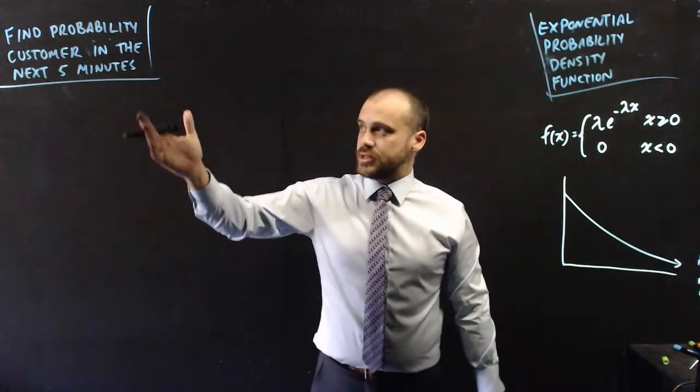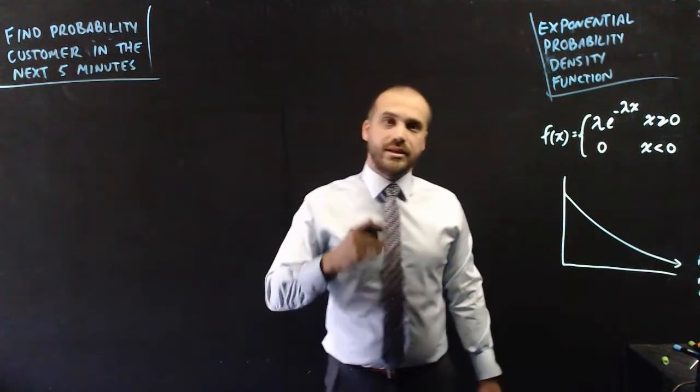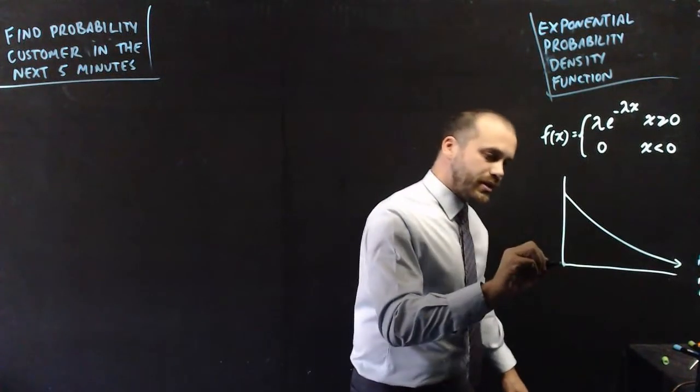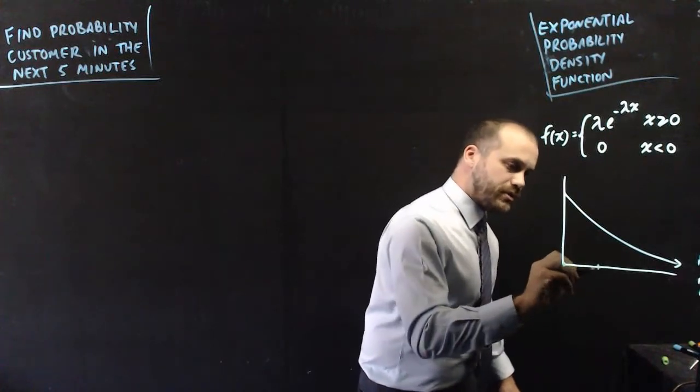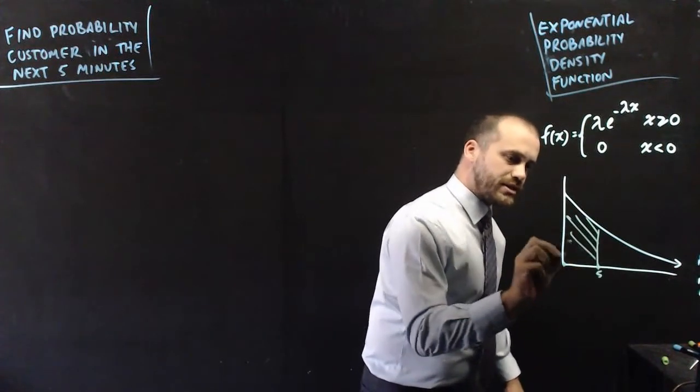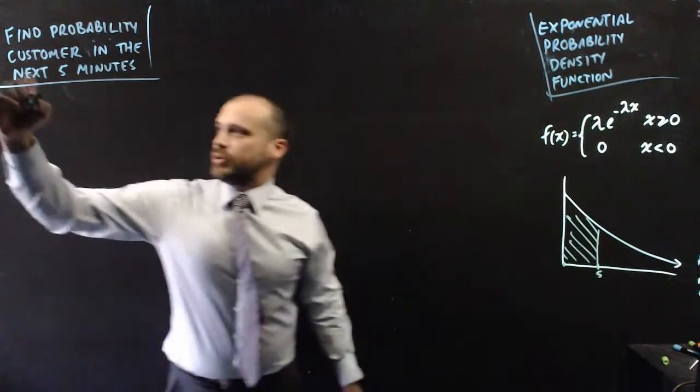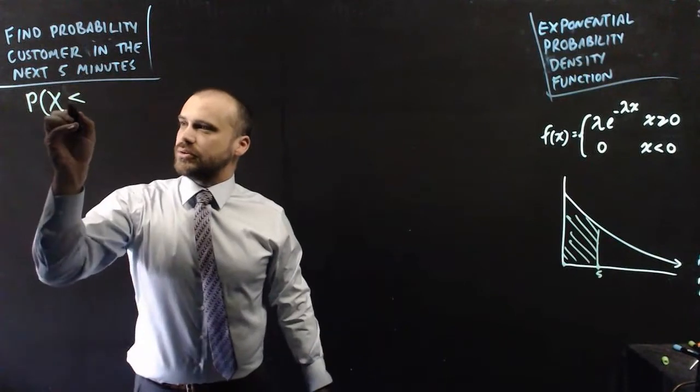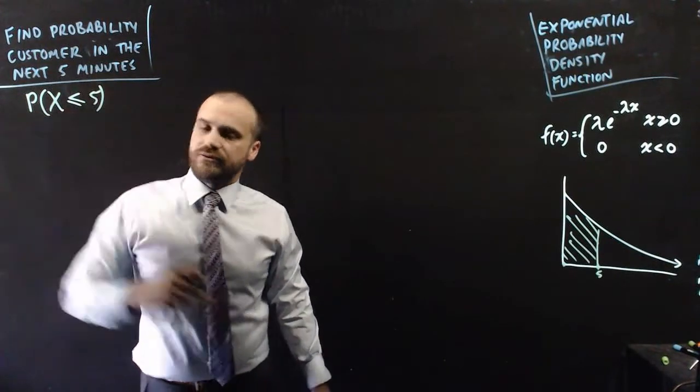So in this instance, the probability that a customer coming in in the next five minutes is equivalent to the probability that x is between zero and five. So we're trying to find this area here. We're trying to find the probability that x is less than or equal to five.